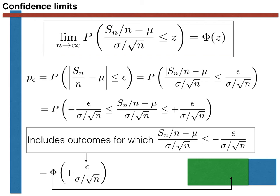We represent these outcomes on our Venn diagram using the purple square. We can estimate the probability that Sn over n minus mu divided by sigma over the square root of n is less than or equal to minus epsilon over sigma over square root of n using the central limit theorem once again. This probability is equal to the second term in the bottom equation. We've put a subtraction sign in front of this term because we are subtracting the purple area from the blue area to get the probability that Sn over n minus mu is between minus epsilon and plus epsilon.